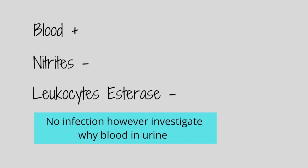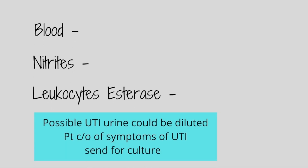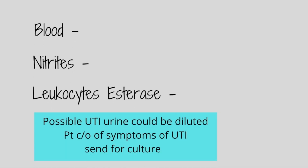The next scenario: blood positive, nitrates negative, leukocytes negative — this is probably more than likely not a UTI. Another scenario: if all three — blood, nitrates, and leukocytes — are all negative, but the patient is complaining of symptoms, I would still send for a culture just to make sure.